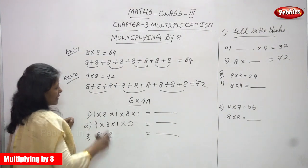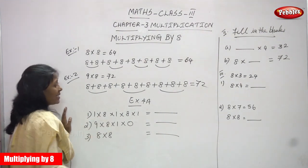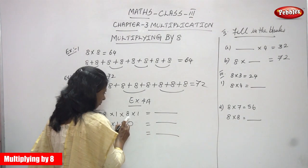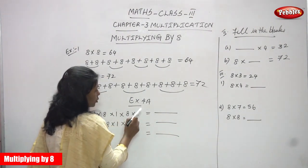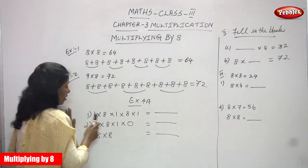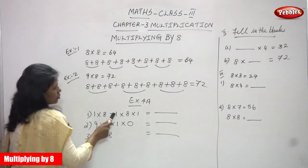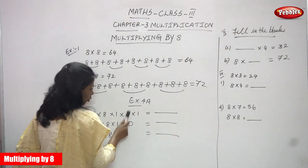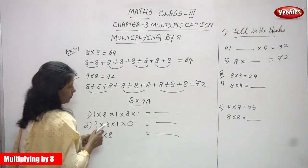Look at this: 1 into 8 is 8; 8 into 1 is 8; 8 into 8 is 64; 64 into 1 is 64.